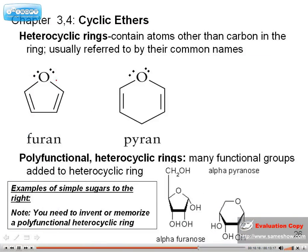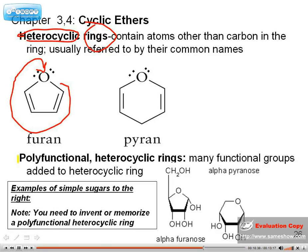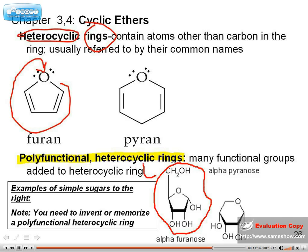You can have cyclic ethers. Here is a cycloalkene where the oxygen makes up part of the ring — these are heterocyclic rings because they contain different atoms. We can also have many functional groups added to these heterocyclic rings, and consequently we call these polyfunctional. I may ask you to make up an example of a polyfunctional heterocyclic ring, or give you one and ask you to name it and identify what type of ring it is.